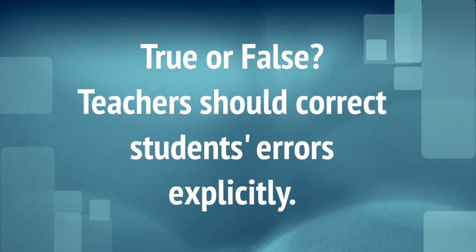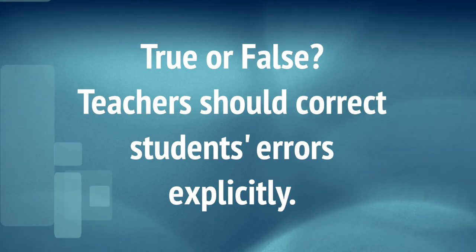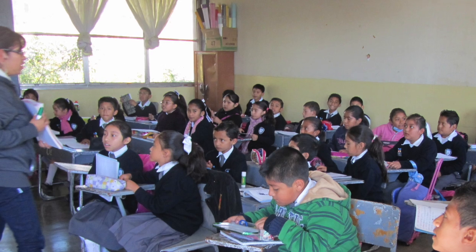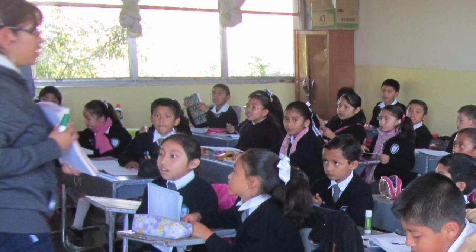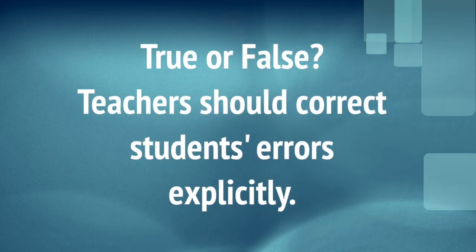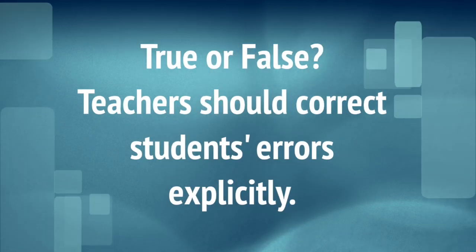Here is a question for you about promoting good oral communication. True or false: teachers should correct students' errors explicitly. For example, a student says, 'Yesterday I go'd to the zoo.' You correct him by saying, 'Not go'd — went. Repeat after me: yesterday I went to the zoo.' So, true or false: teachers should correct students' errors explicitly.